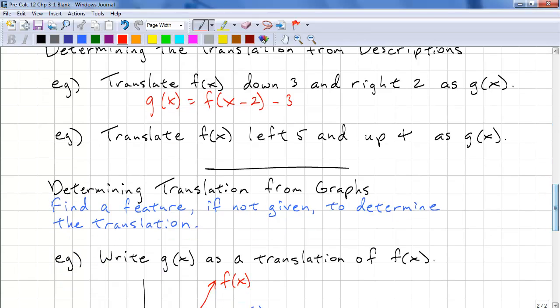Here's another one. f of x is translated left 5 and up 4. Notice that these h and k's can be in different orders depending on the description. Please read carefully before translating. g of x equals f of left is plus 5 and up is plus 4.